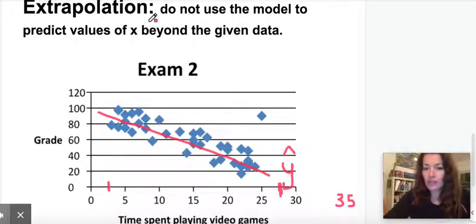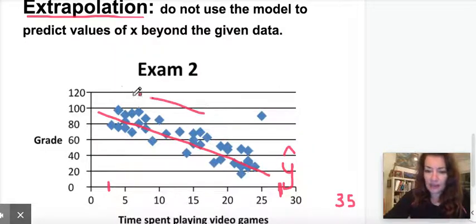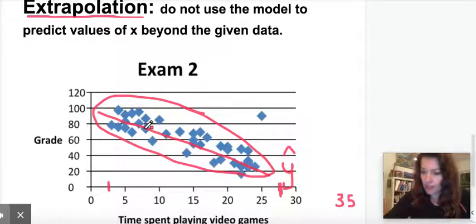But extrapolation is where you do not want to use the model to predict values of X beyond the data. If our data is basically here, then we want to use the best fit line with values within this range, but anything outside of this range would be called extrapolation.